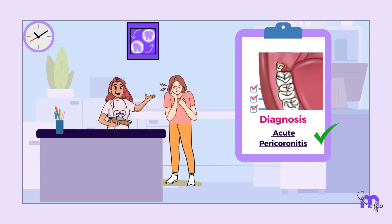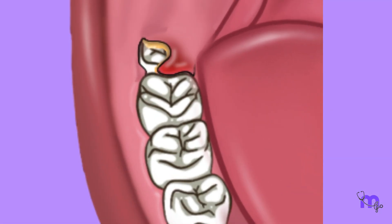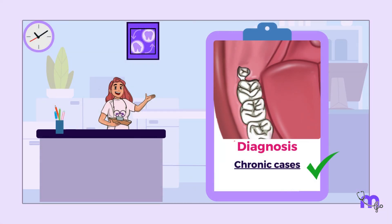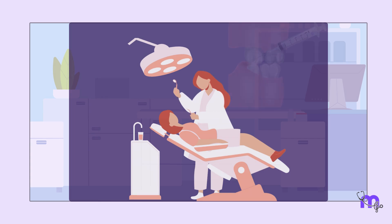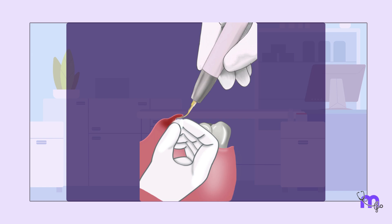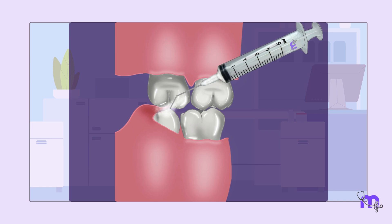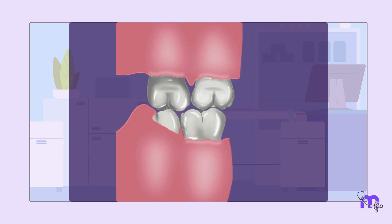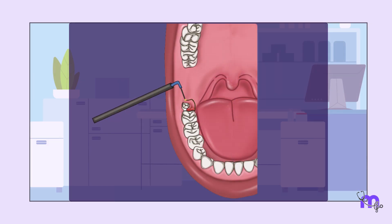I deduced that this acute involvement was triggered by trauma from the opposing tooth and the entrapment of the popcorn kernel. I diagnosed the case as acute pericoronitis, which is the inflammation of the gingiva in the crown portion of a partially erupted tooth. The gingival flap overlying the crown is called a pericoronal flap or an operculum. It is most commonly seen in partially erupted or impacted mandibular third molars.